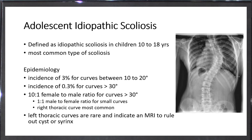Let's concentrate on adolescent idiopathic scoliosis. It's the idiopathic scoliosis in children from 10 to 18 years, and it's the most common type of scoliosis. The incidence is 3 percent for curves between 10 to 20 degrees, 0.3 percent for curves more than 30 degrees. For curves more than 30 degrees, the female to male ratio is 10 to 1, but it's 1 to 1 for small curves. The right thoracic curve is the most common.